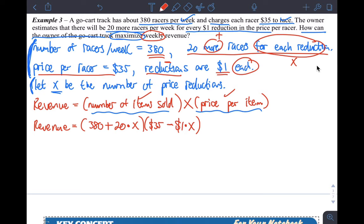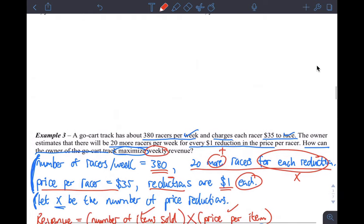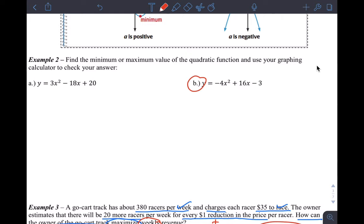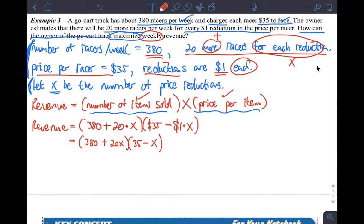That's really the solution, except we have to answer the question, but this is the key to the solution. And so we can rewrite this a little bit more mathematically: 380 plus 20X times 35 minus X. So there's two ways you can do this. You can foil this, but I'm just going to show you the method we used in example two, how to find a maximum or minimum on your calculator. You can type this directly in your calculator.